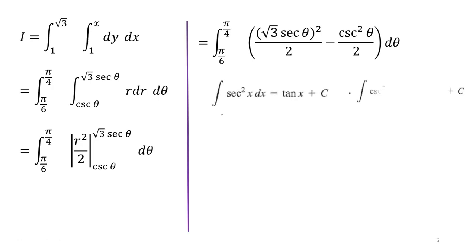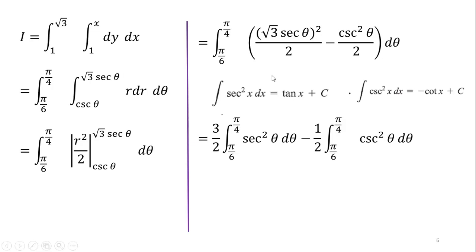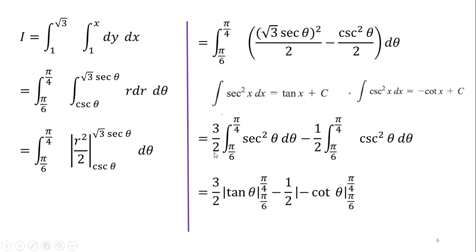Using the integration formulas for sec²θ and csc²θ: simplifying, (√3)² = 3, so 3/2 is a constant factor taken outside and we integrate sec²θ. Minus 1/2 times the integral of csc²θ dθ. Applying the formulas, we have (3/2) tanθ evaluated from π/6 to π/4, minus (1/2)(−cotθ) evaluated from π/6 to π/4.